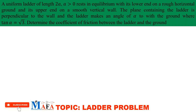The equation reads: a uniform ladder of length 2a, where a is greater than zero, rests in equilibrium with its lower end on a rough horizontal ground and its upper end on a smooth vertical wall. The plane containing the ladder is perpendicular to the wall, and the ladder makes an angle alpha with the ground, where tan(alpha) is equal to the square root of three.